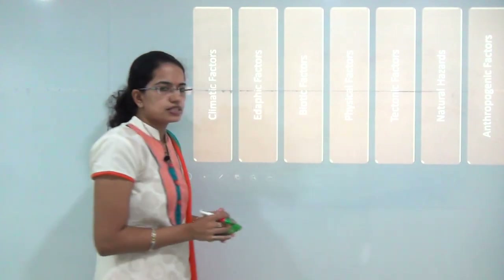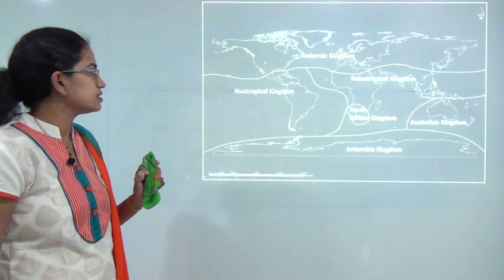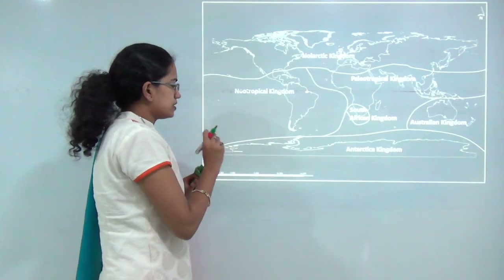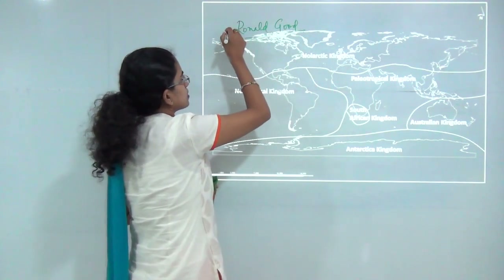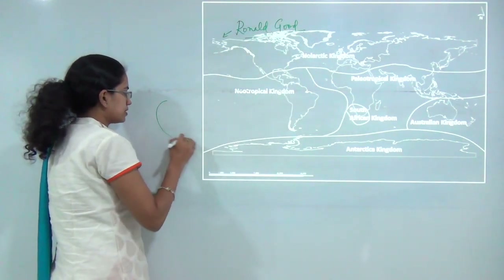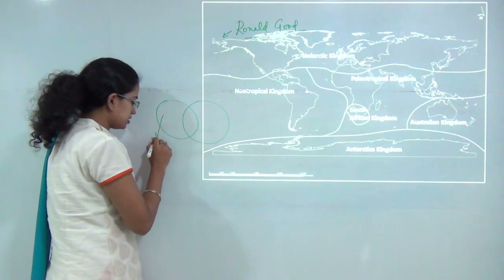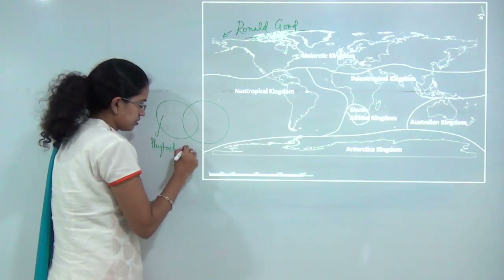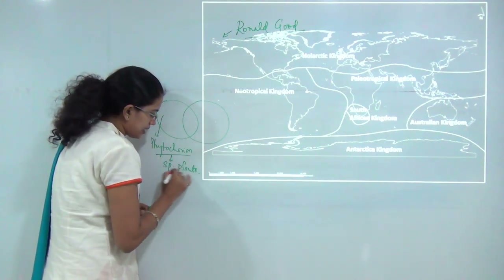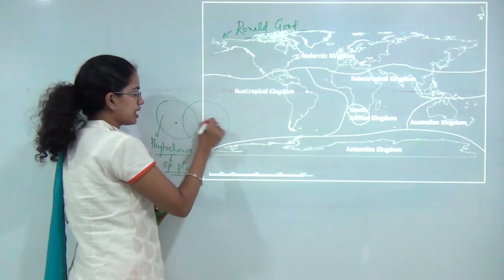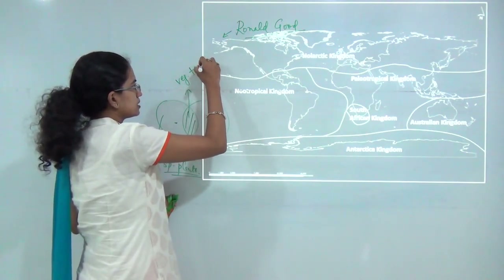When covering the distribution of terrestrial plants, the classification was given by Ronald Good. He explained the concept of the phytochore — a region associated with a particular plant species that has no physical boundaries. Wherever there is overlap between two phytochore regions, that area is known as the vegetation tension zone.